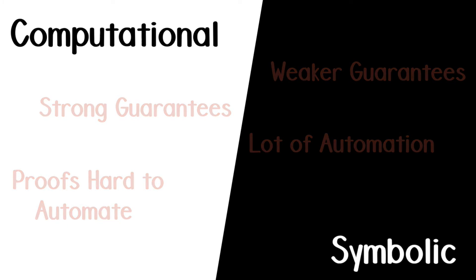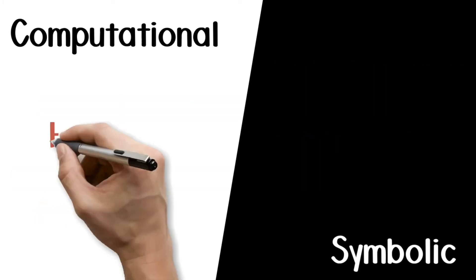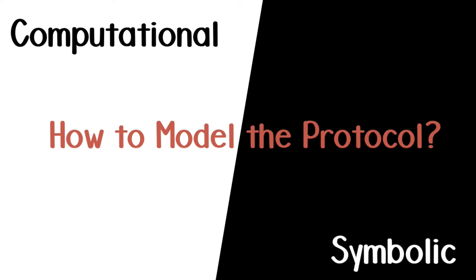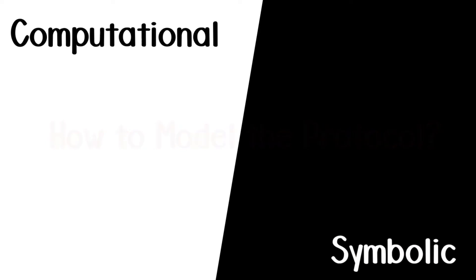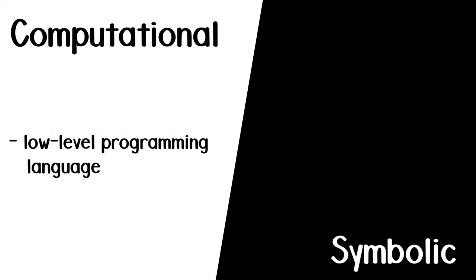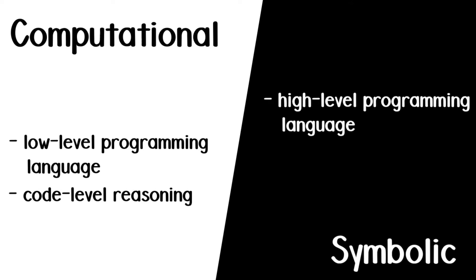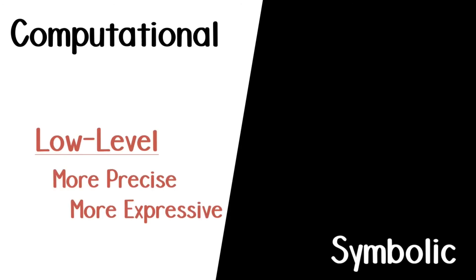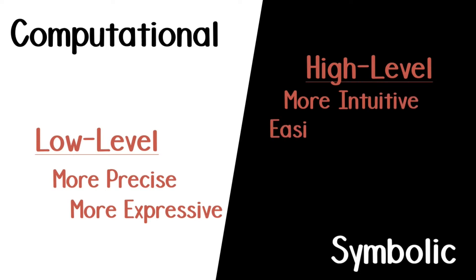The second big difference between the two models is on how we write and reason about protocols. In the computational model, we describe protocols with a low-level and detailed programming language, and we then perform transformations at the level of the code to prove security. In the symbolic model, we describe protocols with a high-level programming language, and we reason over the set of all possible executions of this protocol to show the security. Essentially, one is low-level, and this is more precise and expressive, and one is high-level, and this is more intuitive and easier to manipulate.